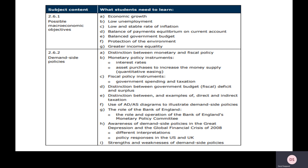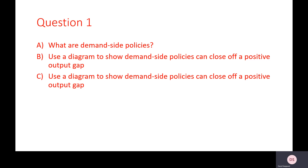What I would like you to do first is scribble down the questions in your books, hit pause and write down your answers. By the way there is a bit of a mistake — on B it says 'close off a positive output gap', and C then says 'close off a positive output gap' again. Can you change C to say 'negative output gap'? So B should be about positive output gaps and C should be about negative output gaps.